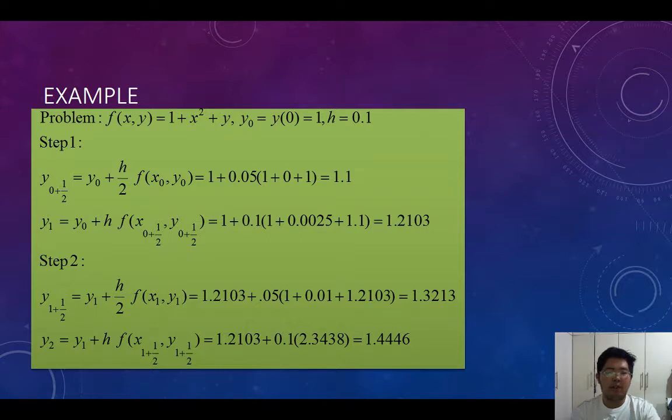For our given example, f(x,y) = 1 + x^2 + y, with initial y_0 = 1 and step size h = 0.1.